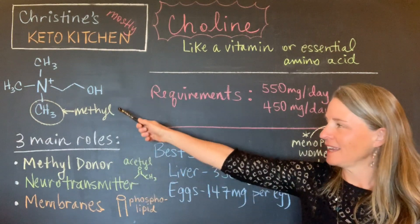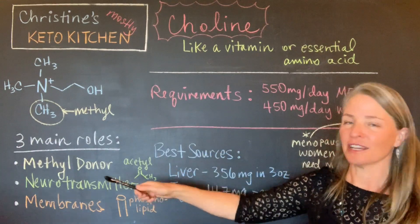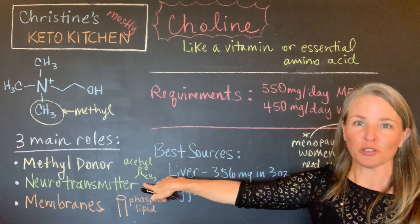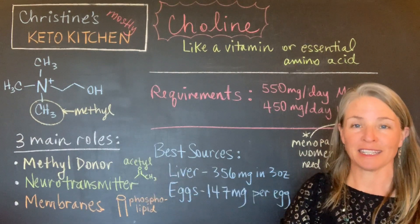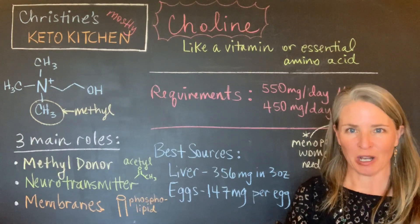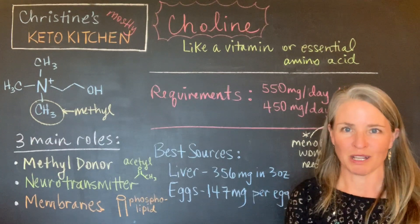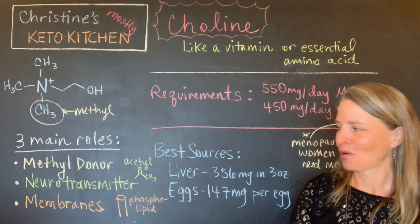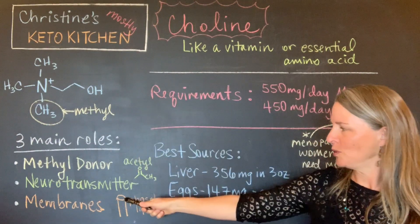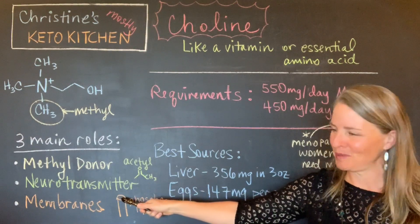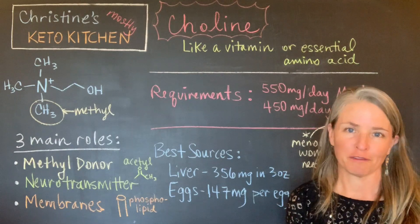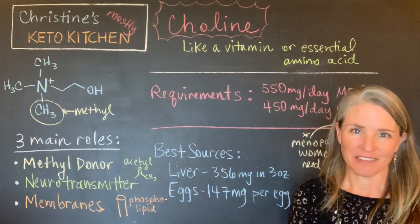In addition, choline is involved as a neurotransmitter. Instead of that OH at the end, it gets what's called an acetyl group put onto it, and that becomes acetylcholine — a neurotransmitter that functions in your muscles, helping your nerves communicate to your muscles. Incredibly important. Also in membranes: that choline group can get put onto the circular top part of this phospholipid that I drew.